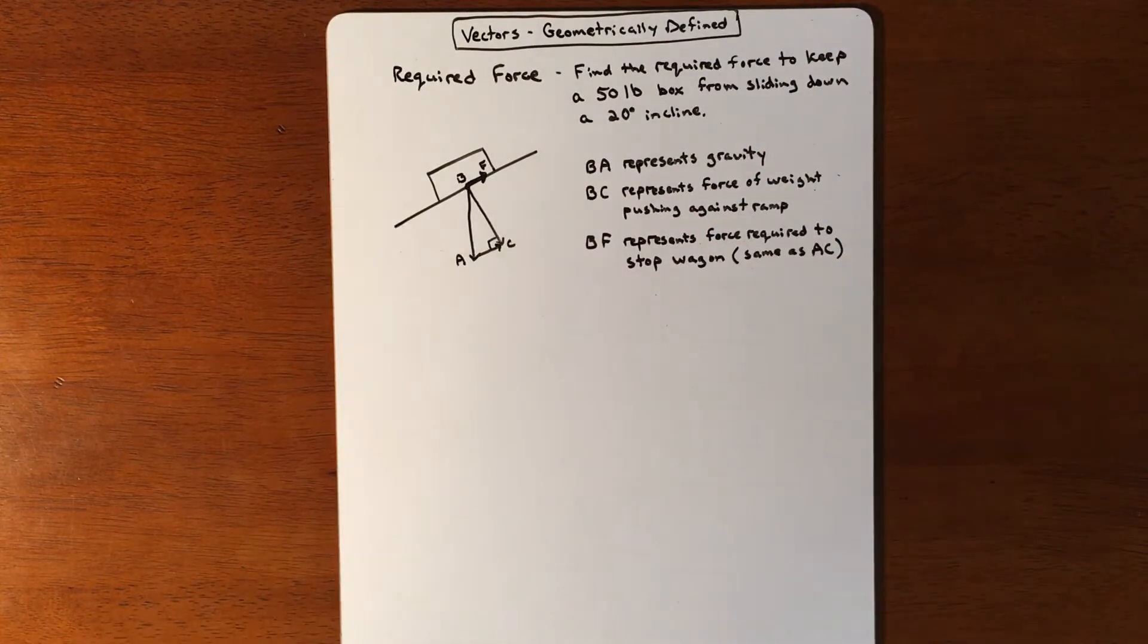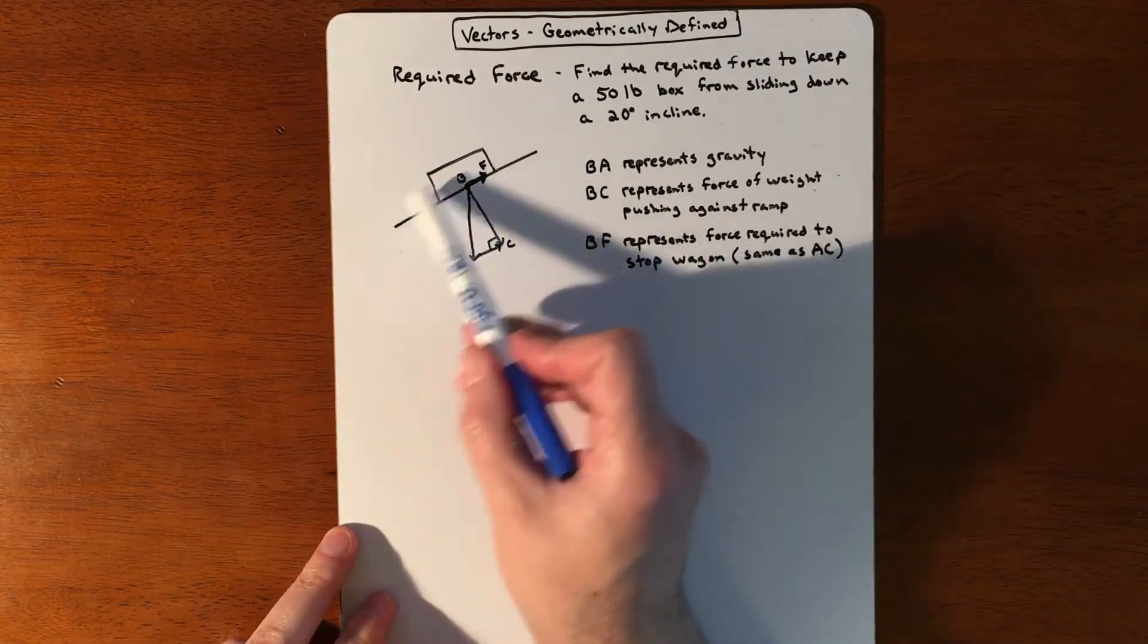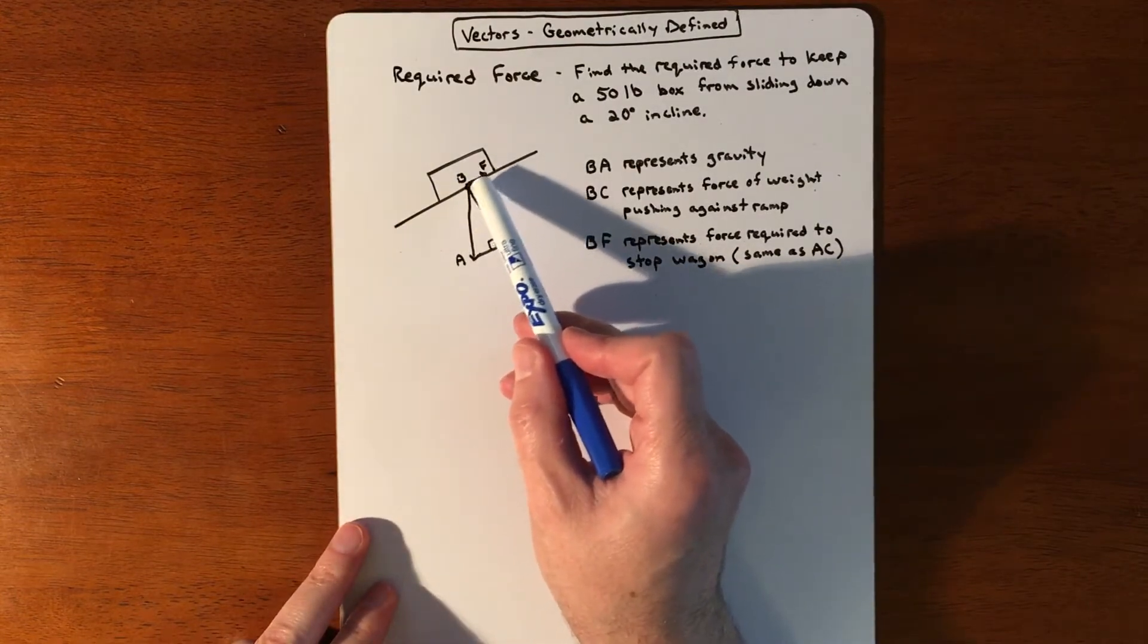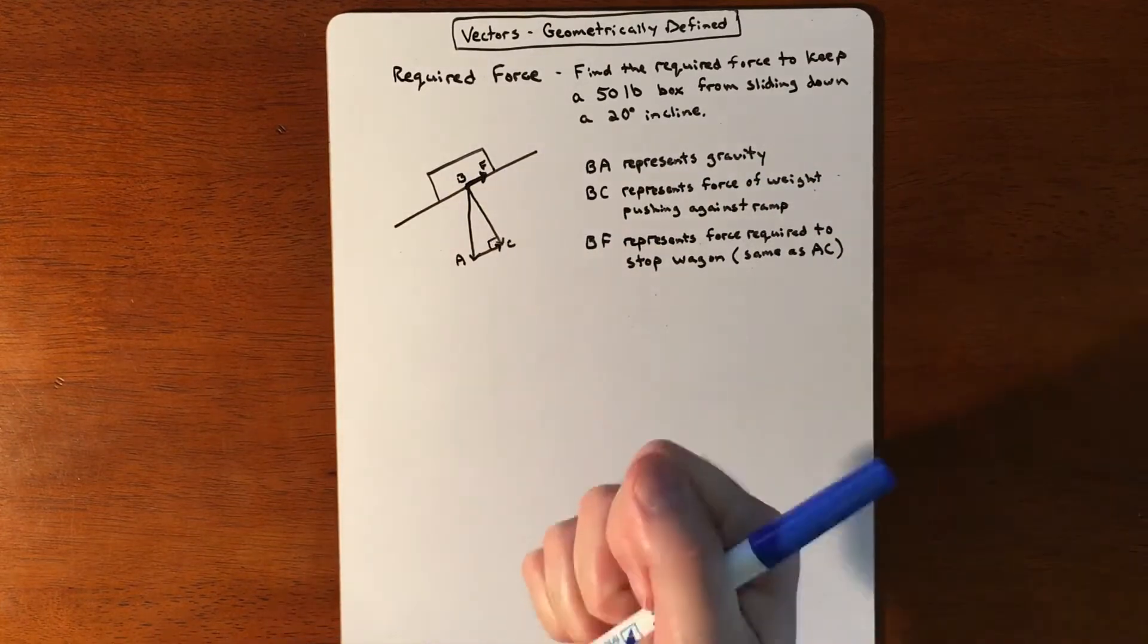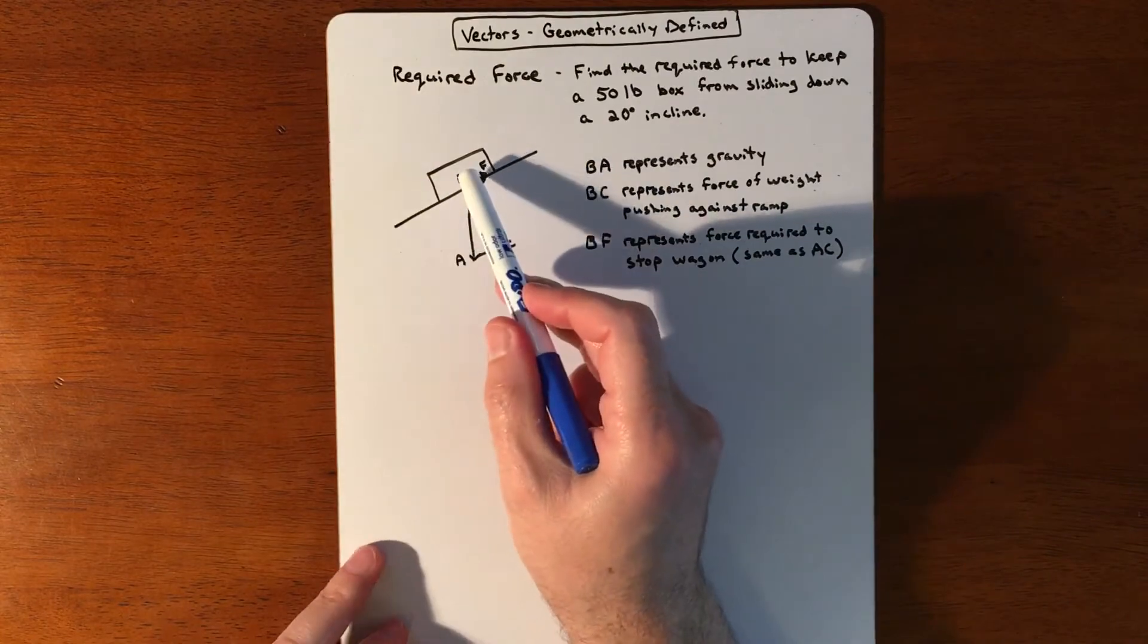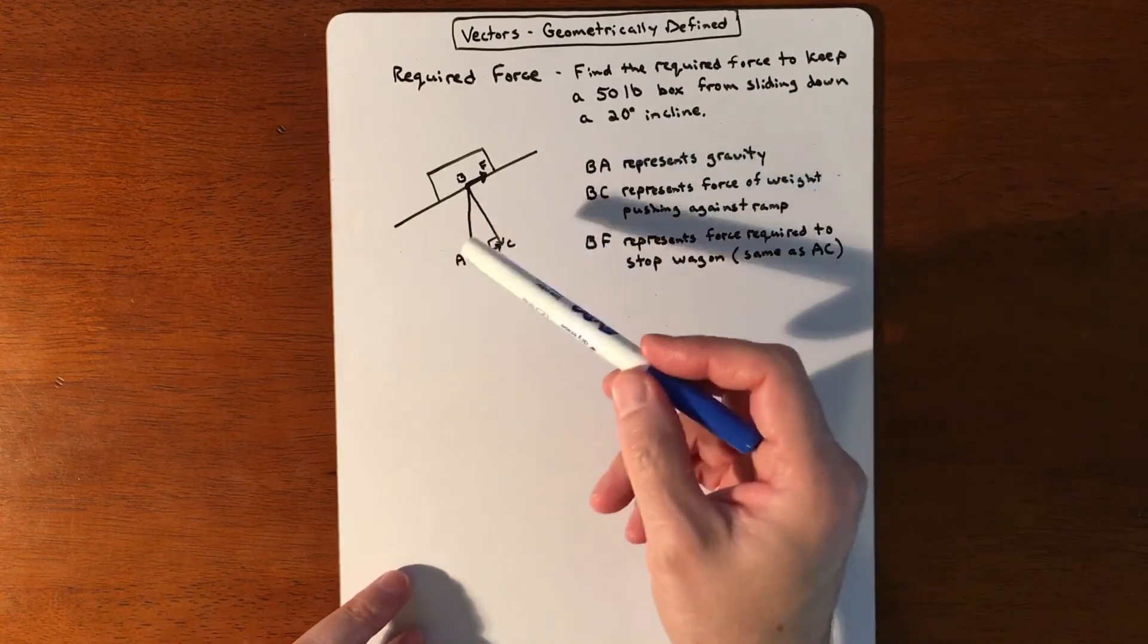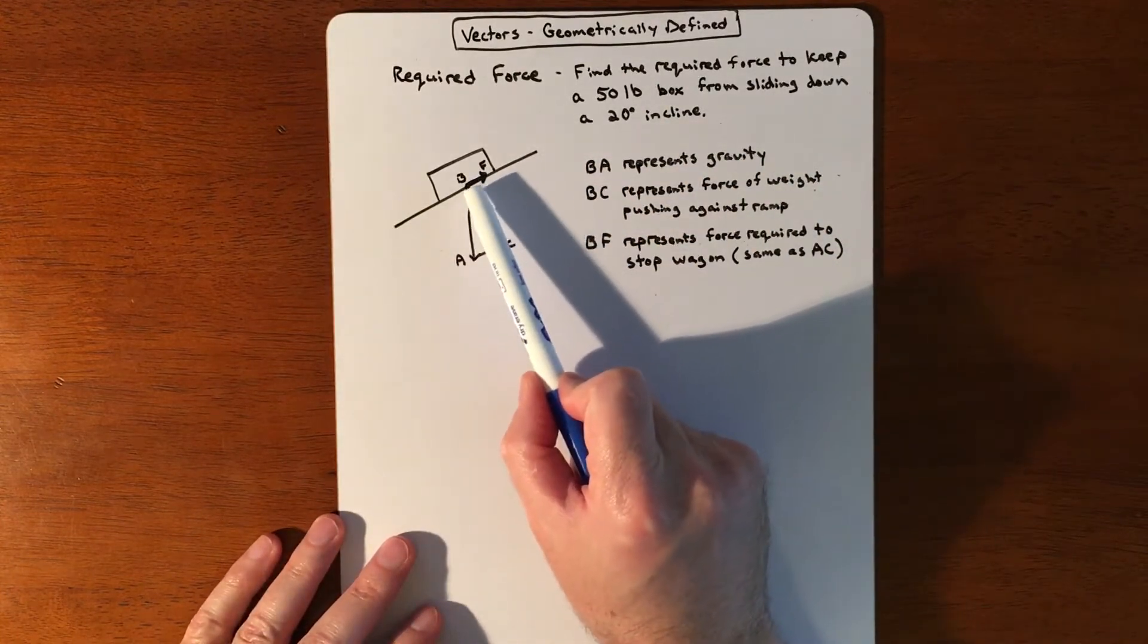This box wants to slide down because gravity is pulling it in that direction. BF represents how much force we need to keep it stationary—we're not pulling it up or down, just stopping it. We have all these different forces happening. BF is what we're trying to find: how much force do we need to pull in that direction to stabilize it.